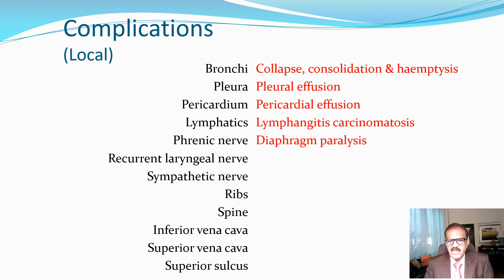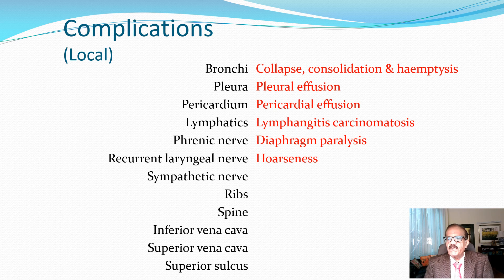If the recurrent laryngeal nerve is involved — the nerve which supplies our epiglottis and vocal cords — there may be hoarseness. Anybody who has prolonged hoarseness must be investigated. Short-term hoarseness of just one week may be due to viral infection or an allergic process, but prolonged hoarseness requires ruling out cancer — either epiglottic cancer, vocal cord malignancy, or lung cancer. Hypothyroidism is also a possibility but malignancy must be excluded.